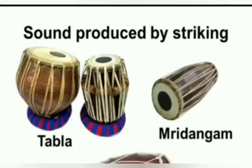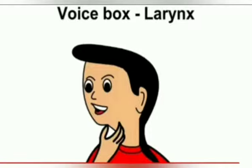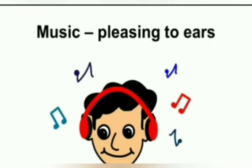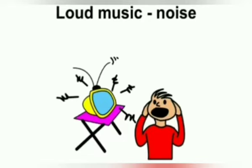All the musical instruments produce music by vibrating some of their parts. Even in humans, sound is produced by vibration of the voice box. When the sound is pleasant to hear, we call it music. And unpleasant sound is called noise.